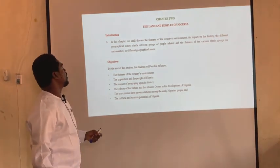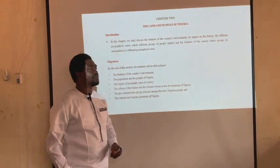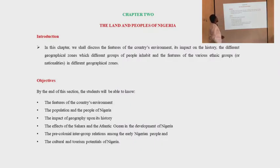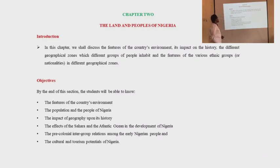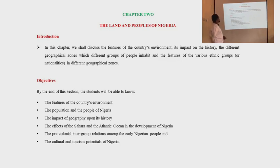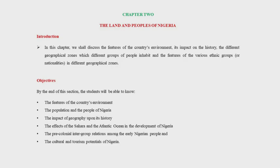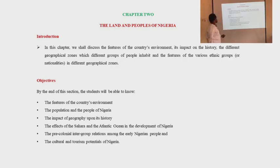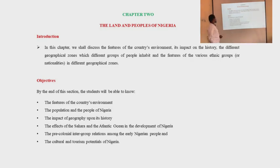In this chapter we shall discuss the features of the country's environment, its impact on history, the different geographical zones which different groups of people inhabit, and the features of the various ethnic groups or nationalities in different geographical zones. The expected outcomes — the objectives — by the end of this session the student will be able to know the features of the country's environment.